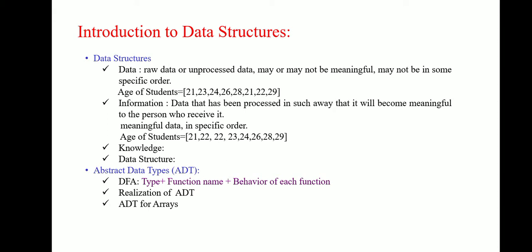Where information, information is data that has been processed in such a way that it will become meaningful to the person who receives it. The information has structure and context. Now here, if you consider this data or information, then this information is arranged in a particular order.